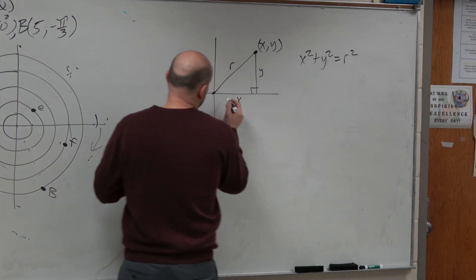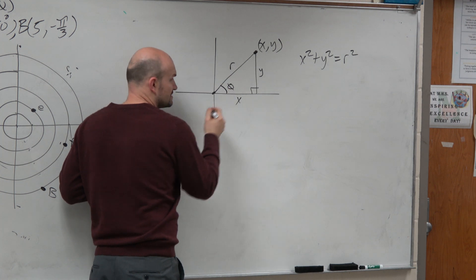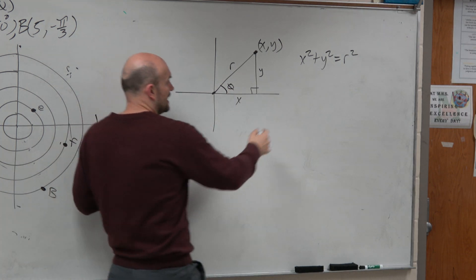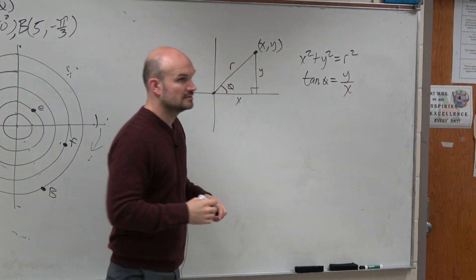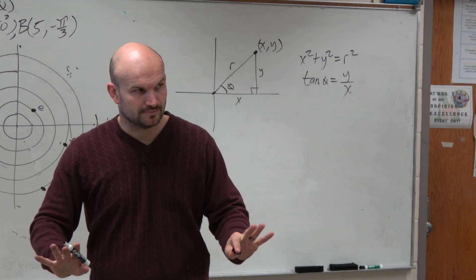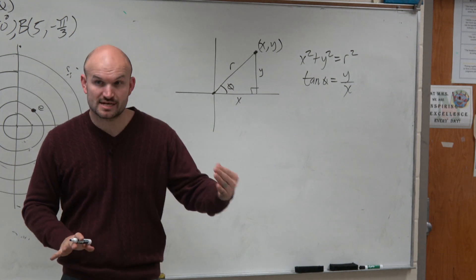Then we said, well, this angle we're going to call theta. And that means the tangent of theta is y over x, right? This was from chapter 4, section 3.